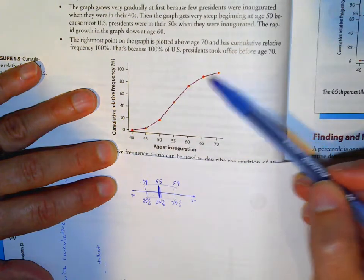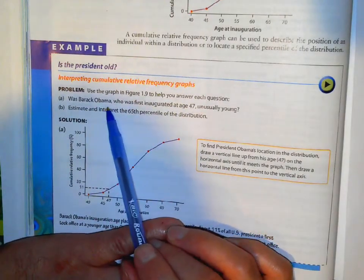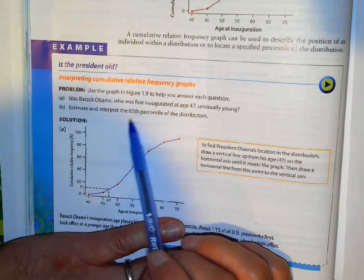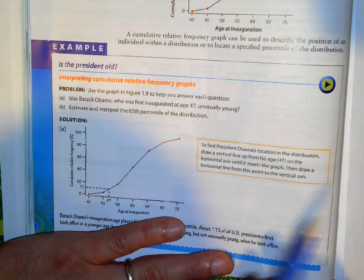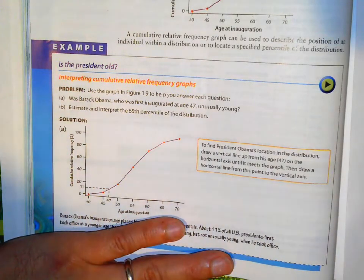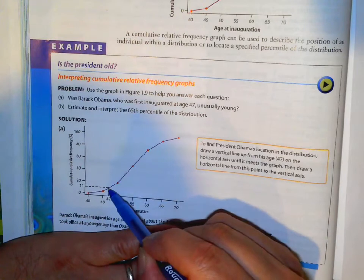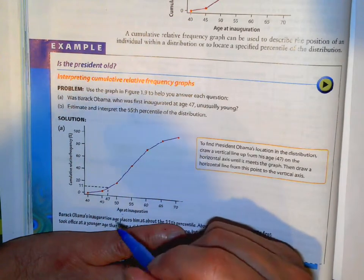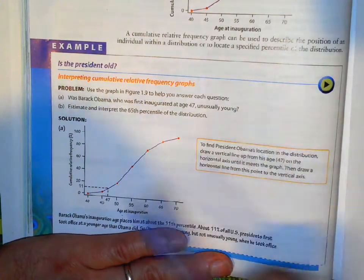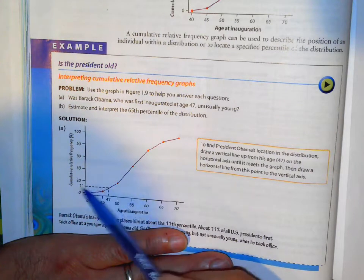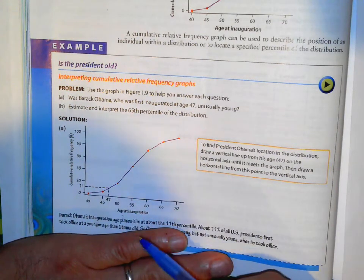So we look at this example here. Let's have you guys try this one. So part A was Barack Obama, who was inaugurated at age 47 unusually young. And then B, estimate and interpret the 65th percentile for the distribution. So you guys give that a try. Pause the video and give it a try. So part A at 47. 47 age. 47 is about here. So that's roughly about the 11th percentile. So he was pretty young. They're about 11% percentile means that age or younger. So there were about 11% of US presidents who took office at his age or younger than him. So he was fairly young.